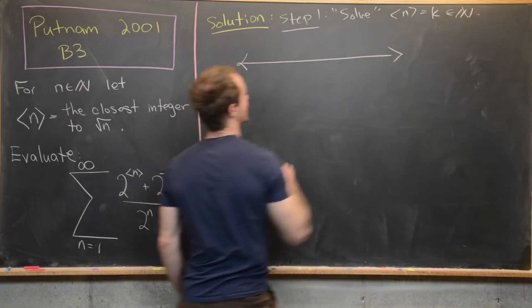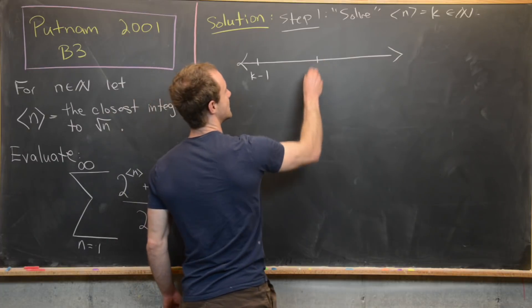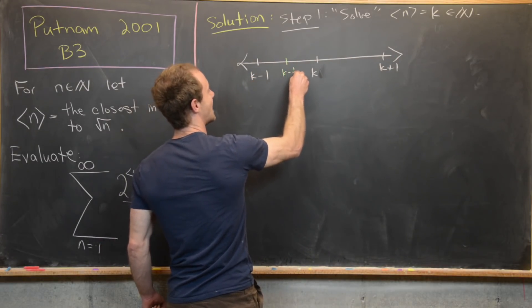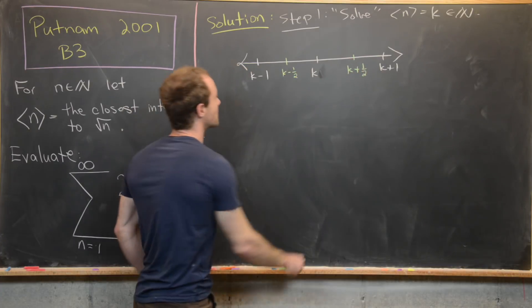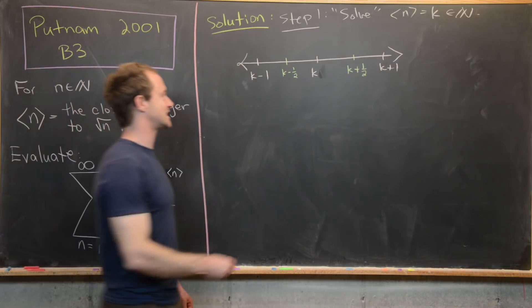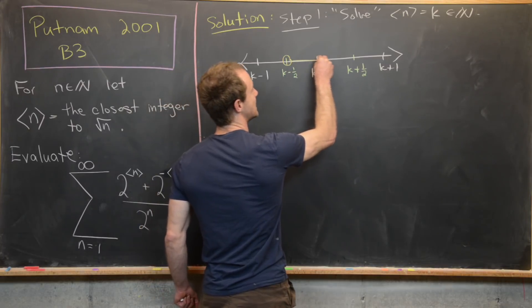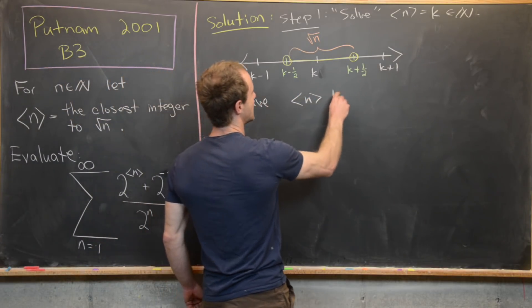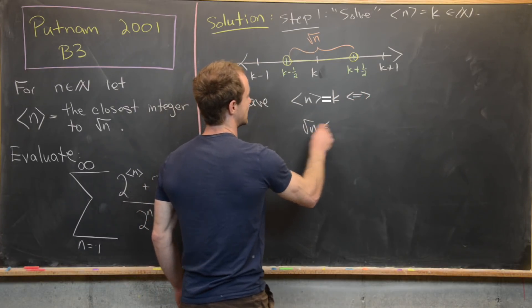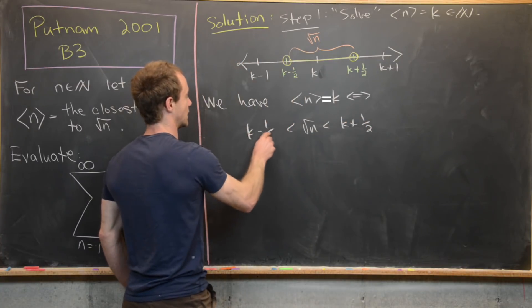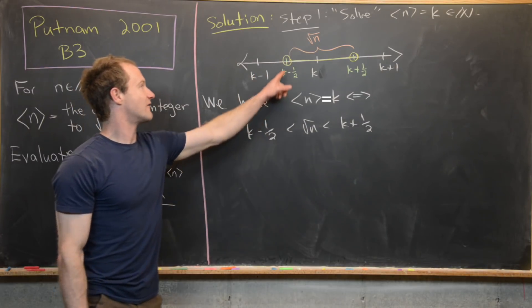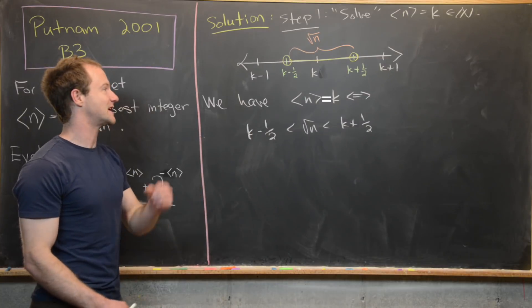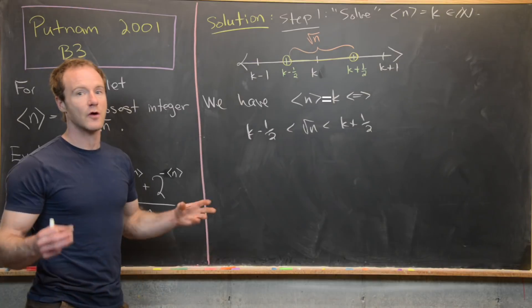I'll put k minus 1, k, and k plus 1 on the number line, along with k minus one-half and k plus one-half. For angle bracket n to equal k, we need the square root of n to be inside that open interval. So angle bracket n equals k if and only if the square root of n is between k minus one-half and k plus one-half. Note this can't be exactly equal to those half-integer endpoints, because that would imply the square root of 2 is rational, which we know is not the case.